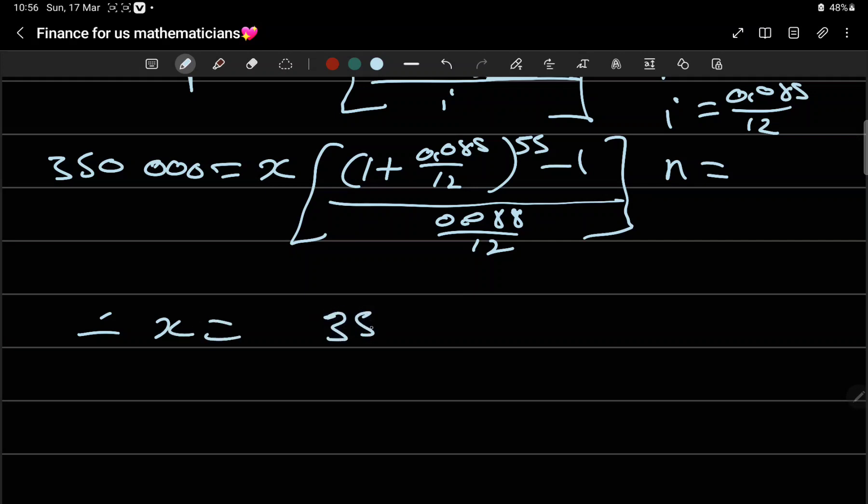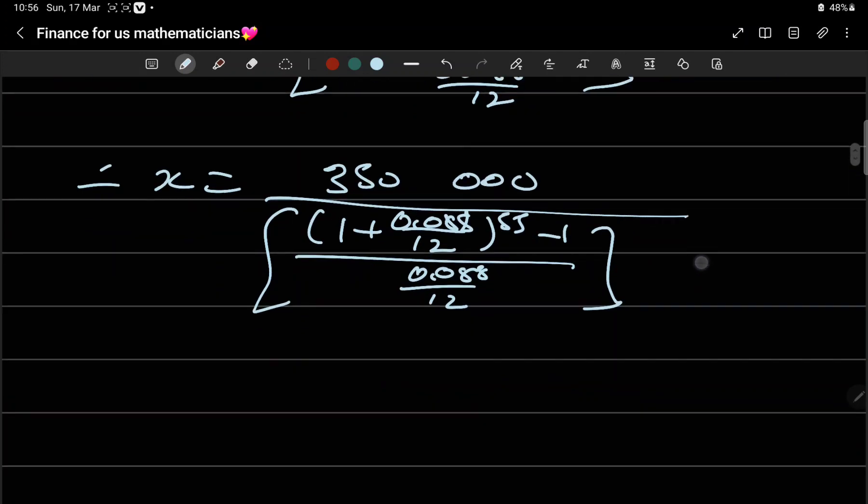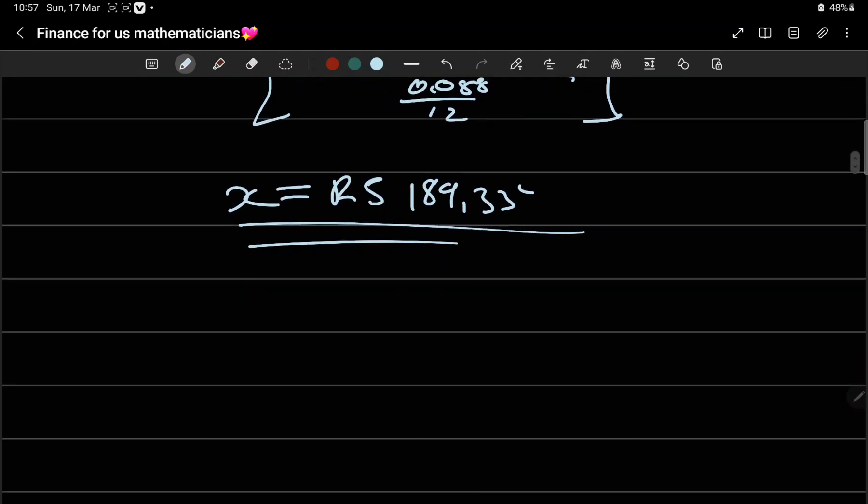Therefore x equals 150,000 over [(1 + 0.088/12)^55 - 1] / (0.088/12) times (1 + 0.088/12)^5. Calculate: you get 2,189.83 cents.